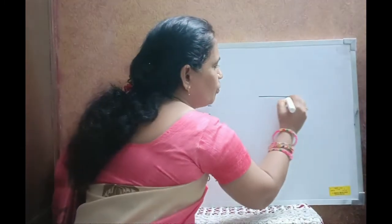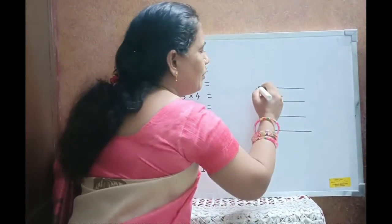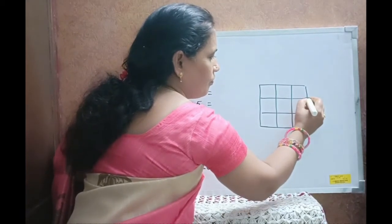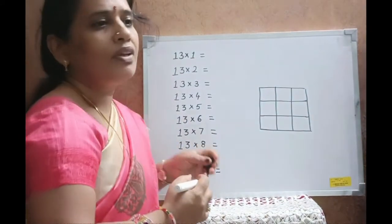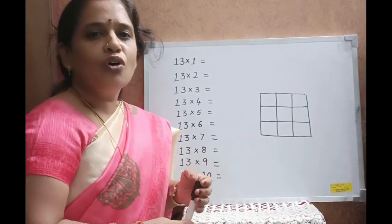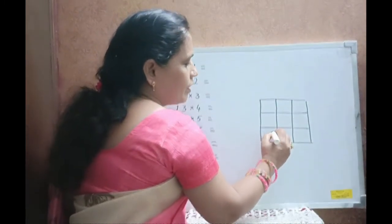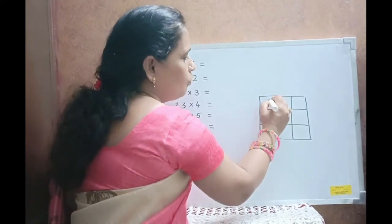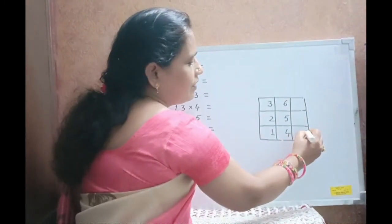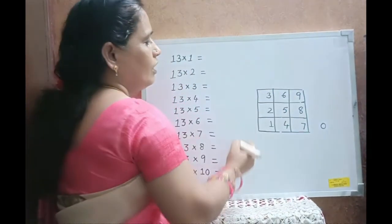For the table of 13, we draw 3 rows and 3 columns in the same way while we learn the table of 3. If you have not seen my previous video, the link is given in the description — please go through it and watch it. Write the numbers 1, 2, 3, 4, 5, 6, 7, 8, 9 and write 0 next to the box.